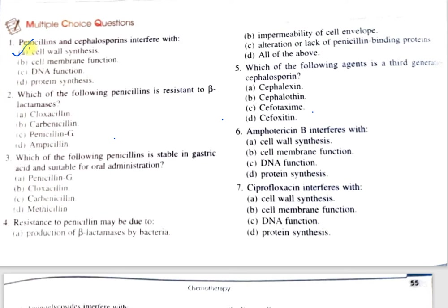Question number 2: Which of the following penicillins is resistant to beta-lactamases? Option A, cloxacillin; B, carbenicillin; C, penicillin G; D, ampicillin. The correct option is A, cloxacillin. Cloxacillin is used to treat infections caused by susceptible gram-positive bacteria which may be producing beta-lactamases, for example, Staphylococcus aureus.